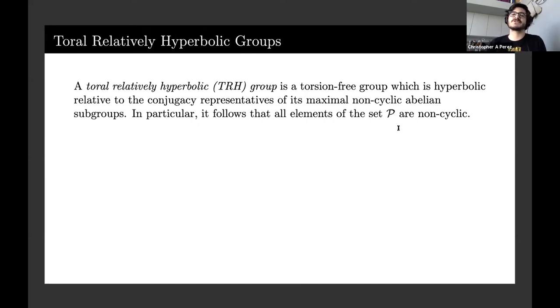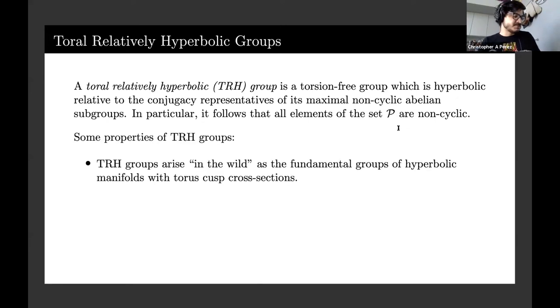A toral relatively hyperbolic group is a torsion-free group which is hyperbolic relative to the conjugacy representatives of its maximal non-cyclic abelian subgroups. These things arise in the wild as the fundamental groups of hyperbolic manifolds with torus cusp cross-section. This is a manifold which is hyperbolic but has a boundary component that looks like a torus.